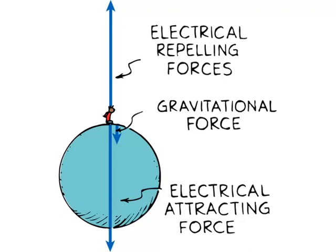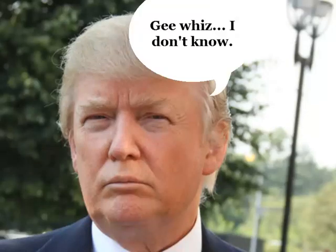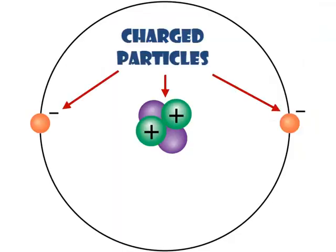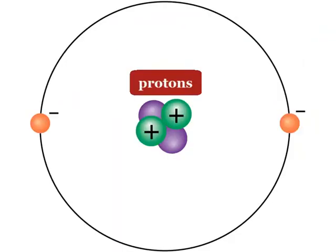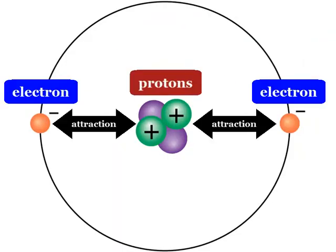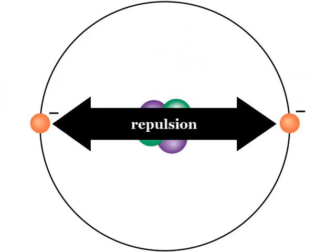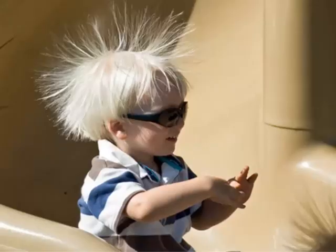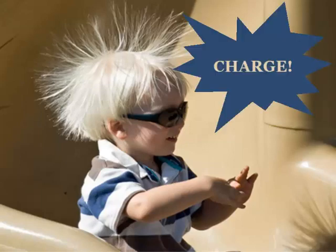So where do electrical forces come from? They come from particles inside the atom. The protons in the nucleus attract the electrons and hold them in orbit. Electrons are attracted to protons, but electrons also repel each other. The fundamental electrical property that gives rise to all these attractions and repulsions is called charge.